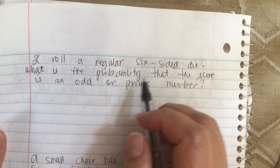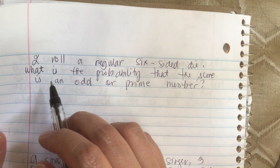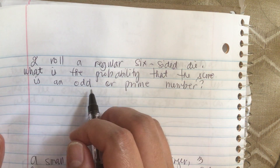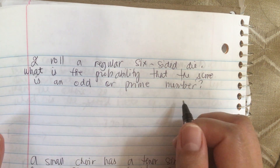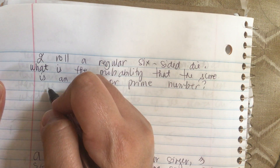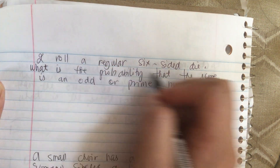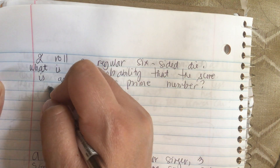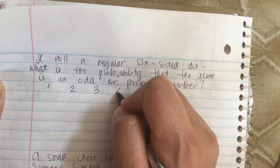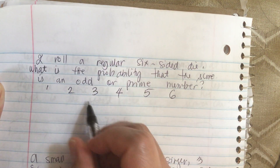I roll a regular six-sided die. What is the probability that the score is an odd or prime number? So, six-sided die, that means there's a one, a two, a three, a four, a five, and a six.